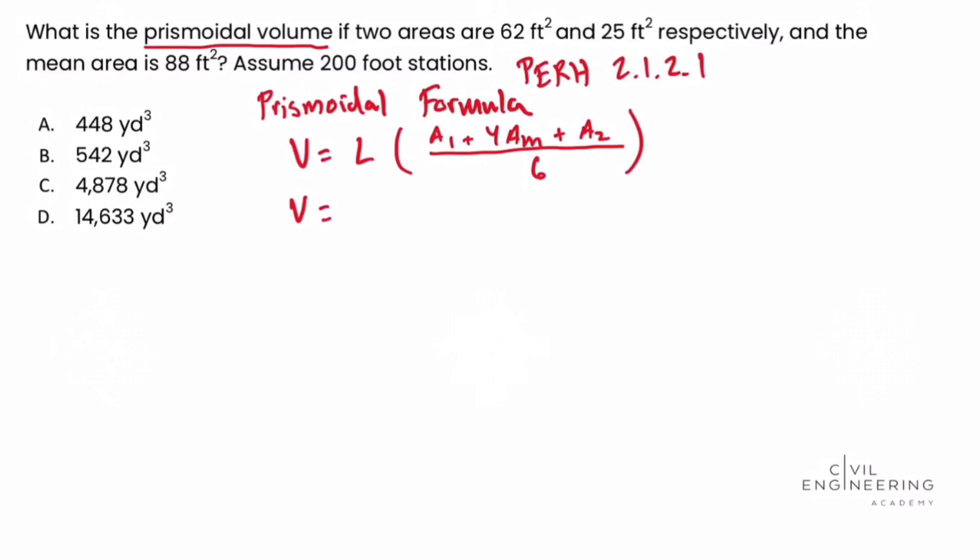well we said in the problem statement we're given 200 foot stations. So we'll write 200 feet open bracket A1, area 1 in the problem statement that's 62 square feet plus 4 times the mean area which is given to us as 88 square feet, 88 square feet plus area 2 which is given as 25 square feet.